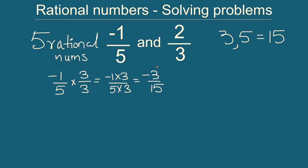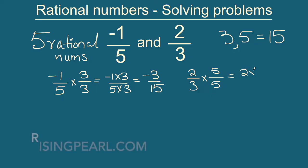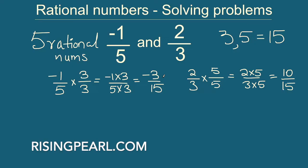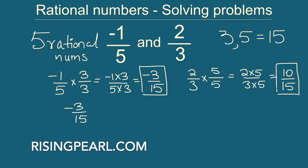So we get minus 1 times 3 over 5 times 3, which is simply minus 3 over 15. So minus 3 over 15 is the equivalent form of minus 1 over 5. Now similarly for 2 by 5: in order to make the denominator 15 we have to multiply by 5, so we multiply both numerator and denominator by 5. This gives us 2 times 5 divided by 3 times 5, which is simply 10 over 15. So now we have two numbers: minus 3 over 15 and 10 over 15.